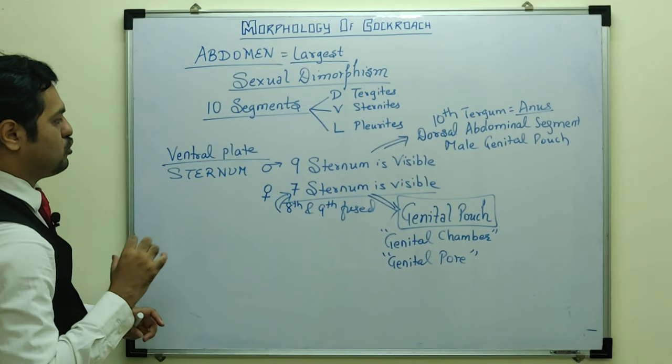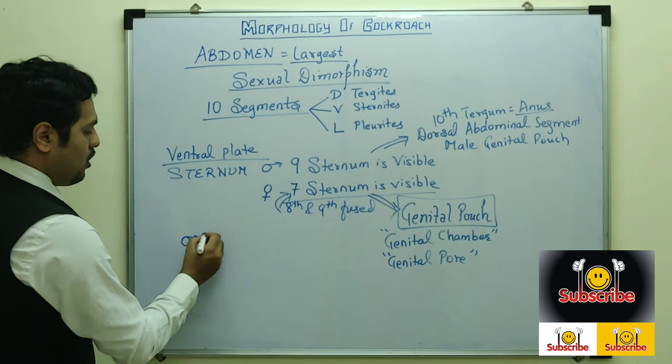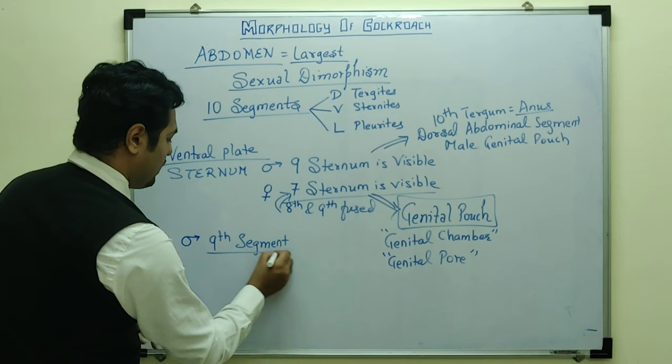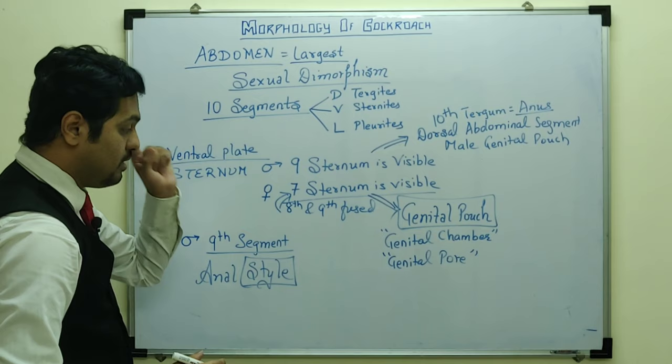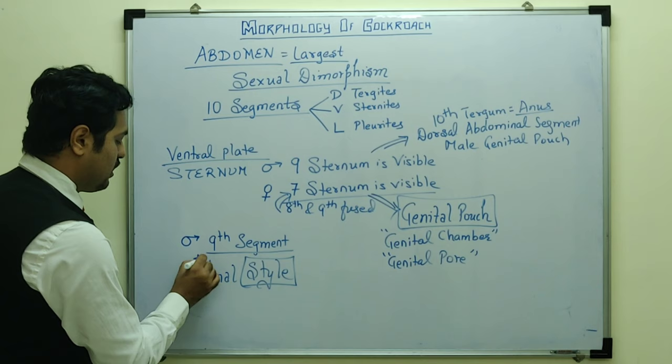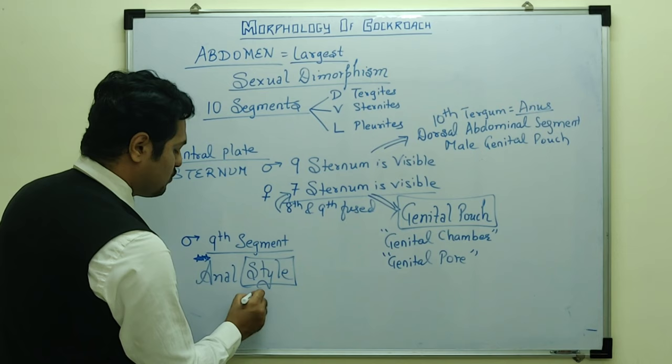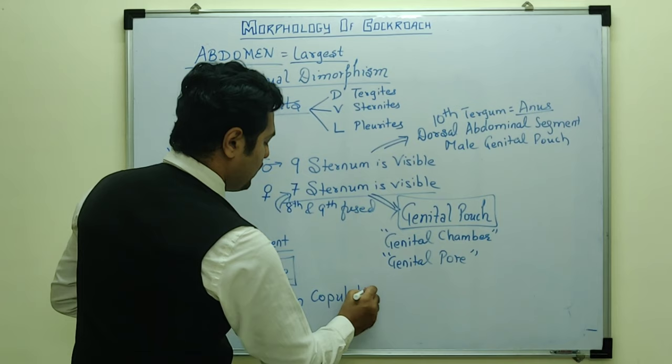A specific feature in male cockroach: on the 9th segment there are structures called anal styles. Anal styles are completely absent in female cockroaches — this is an important sexual dimorphism feature. The function of anal styles is to help in the process of copulation.